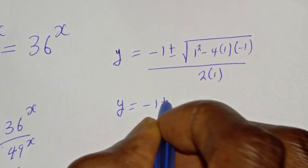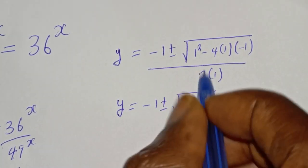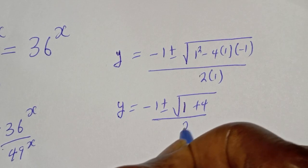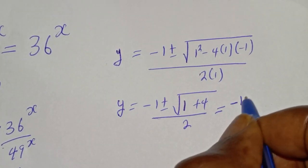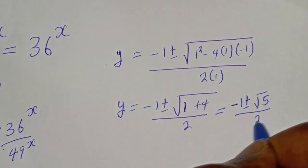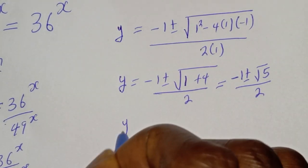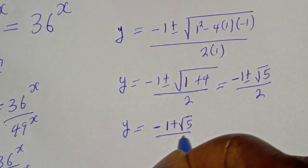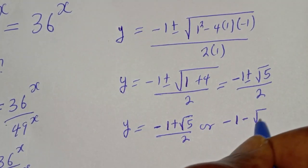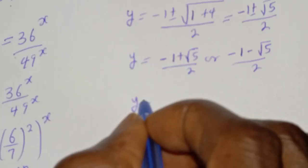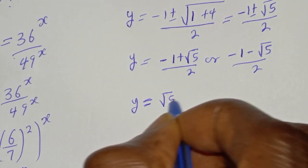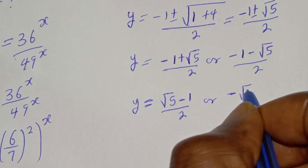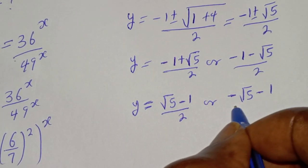This gives y equals minus 1 plus or minus square root of 1 plus 4, over 2, which equals minus 1 plus or minus square root of 5, over 2. So y equals minus 1 plus root 5 over 2, or y equals minus 1 minus root 5 over 2.